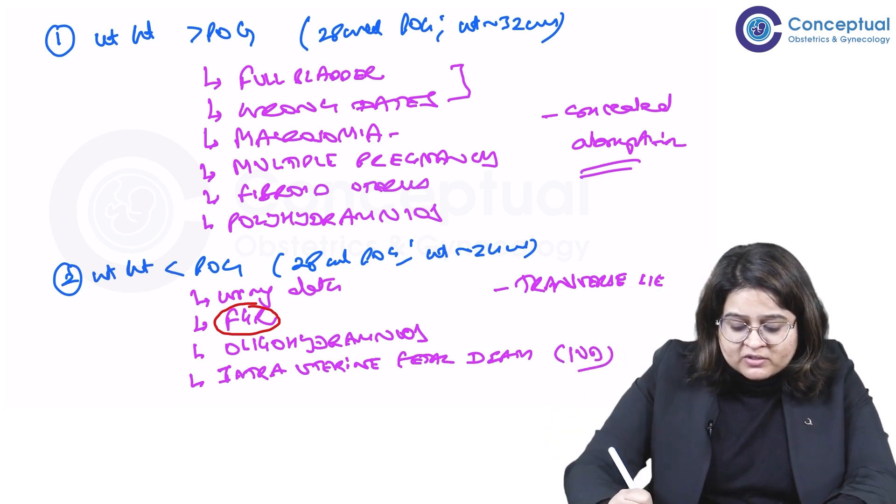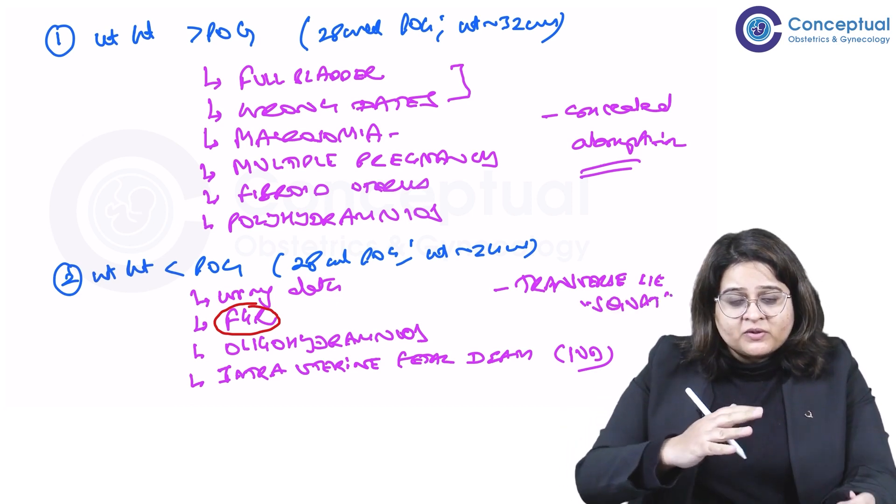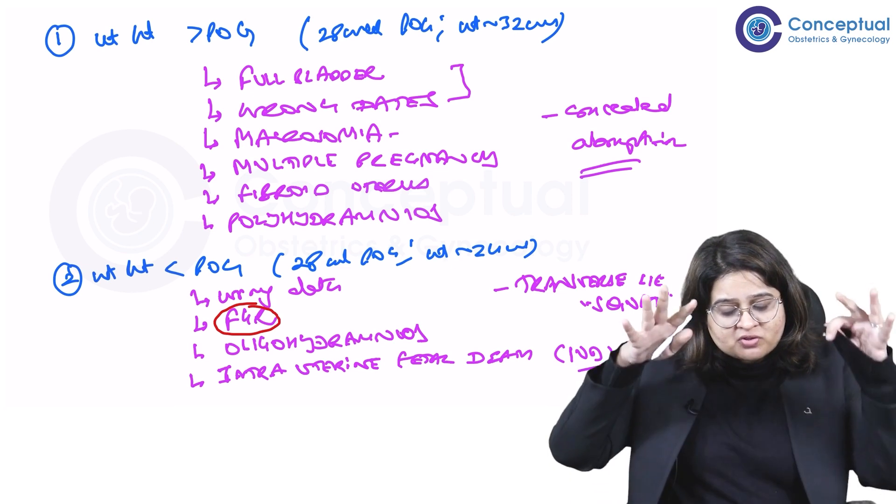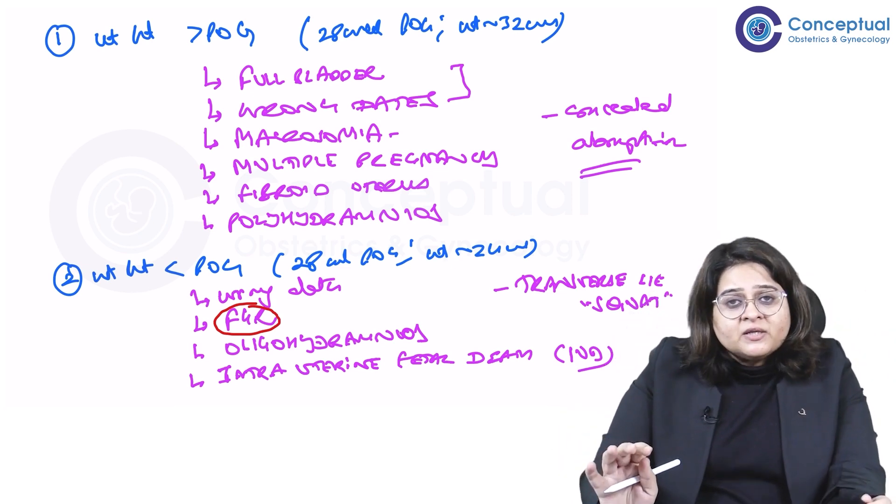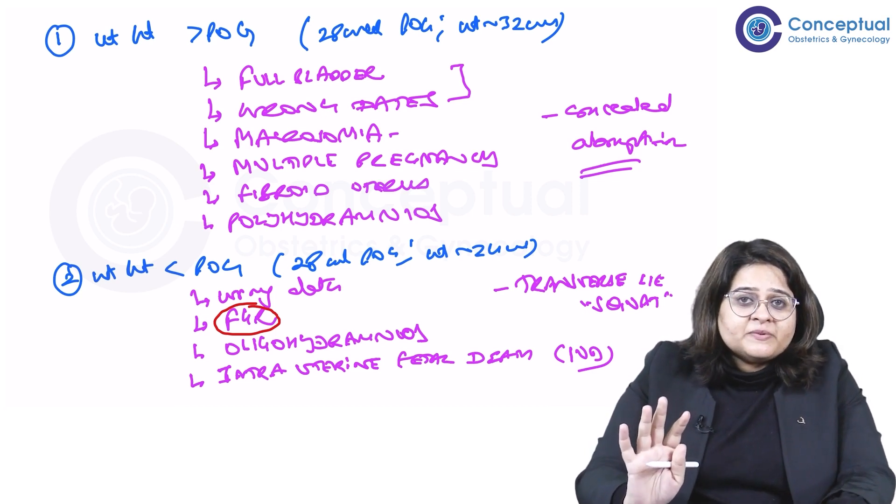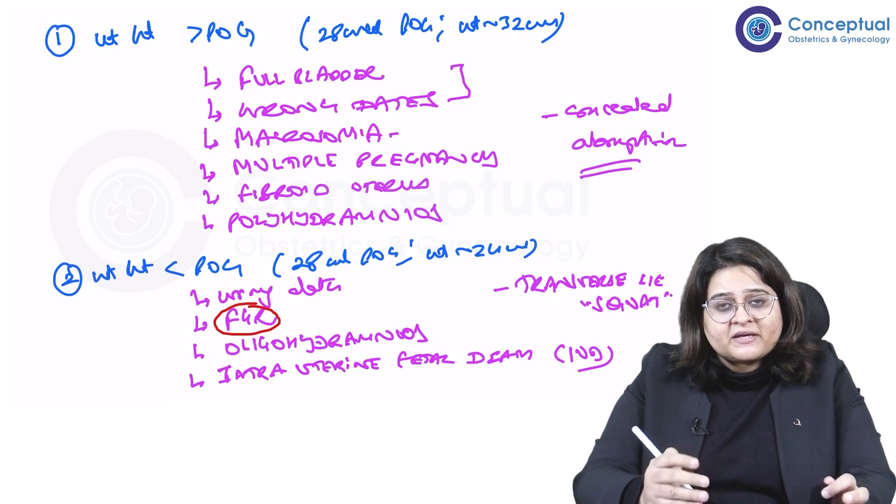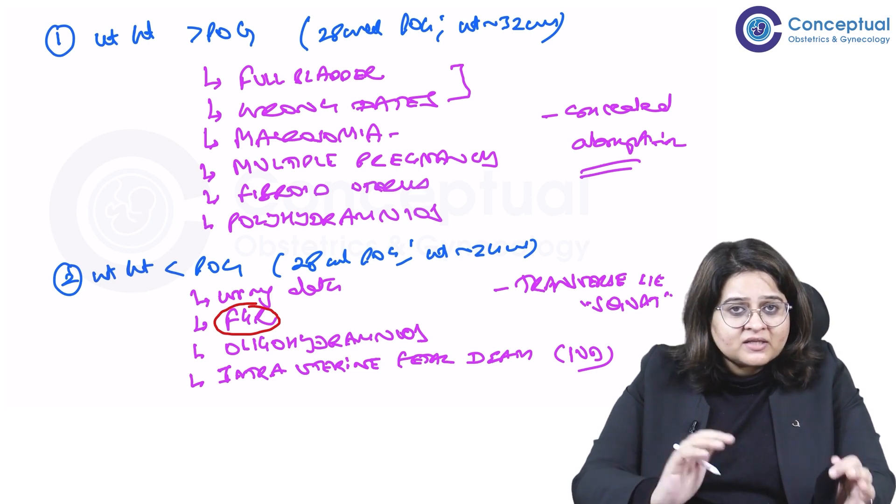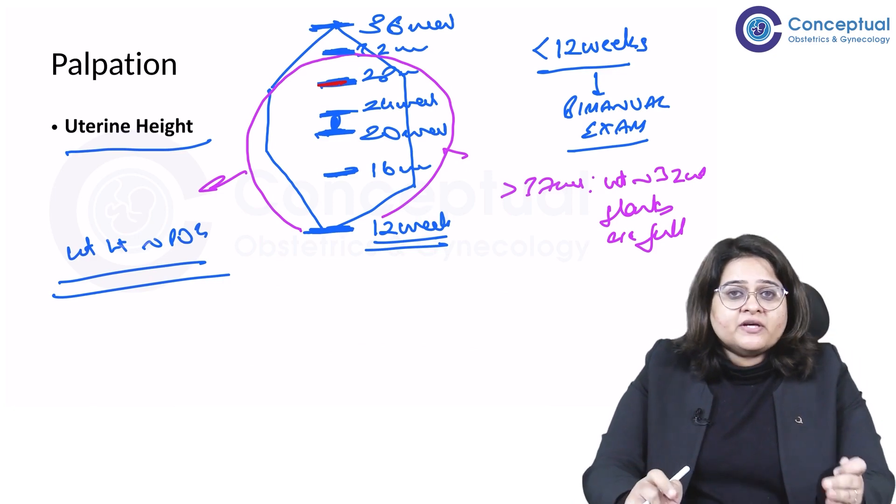So the uterus becomes lesser than the POG. It's called a squat uterus, like somebody is sitting down, because the baby is like this. So if the uterus is called a squat uterus, the height will be less than the period, maybe slightly less than the period of gestation. So these are the causes, and this is where clinical questions can come from. So the first thing in palpation is to look at the uterine height.